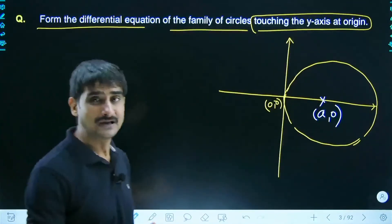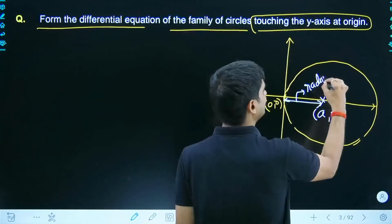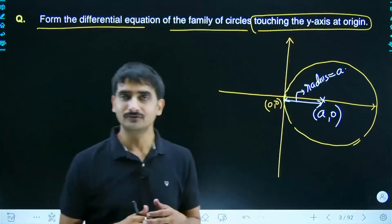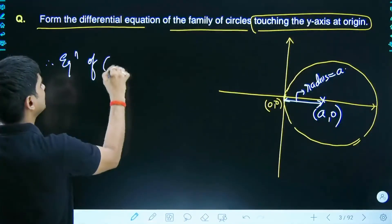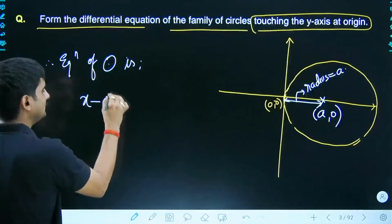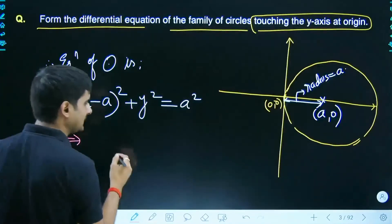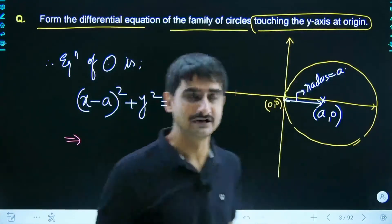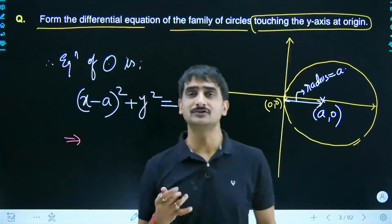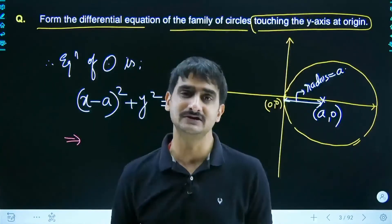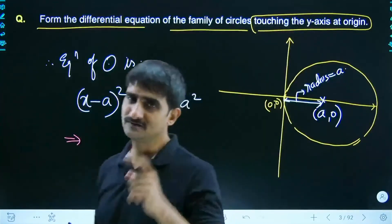Let the center of the circle be (a, 0). Since it passes through the origin, the radius is also 'a' units. Knowing the center and radius, we can write the equation of the circle. This equation has only one unknown constant, and we know how to form a differential equation — differentiate exactly as many times as there are unknown constants. Here, we differentiate exactly once.